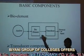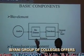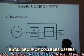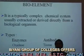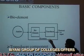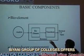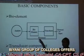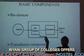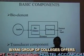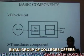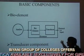The first component is the bioelement, which is made up of enzymes and cells. The second is the transducer component, which is made up of physical components. In a biosensor, the analyte interacts with the bioelement and the transducer, with amplification, and then converts the physical signal into an electrical signal.